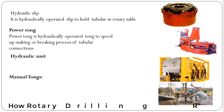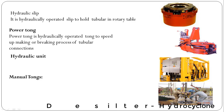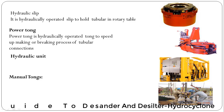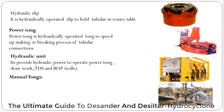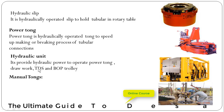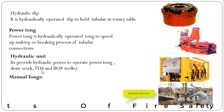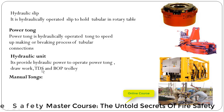Power tongue. The power tongue is a hydraulically operated tong to speed up the making and breaking process of tubular connections. Hydraulic unit: it provides hydraulic power to operate the power tongue, drawworks, TDS, and BOP trolley. Each of these items — drawworks, TDS, and power tongue — will have a separate dedicated hydraulic unit.